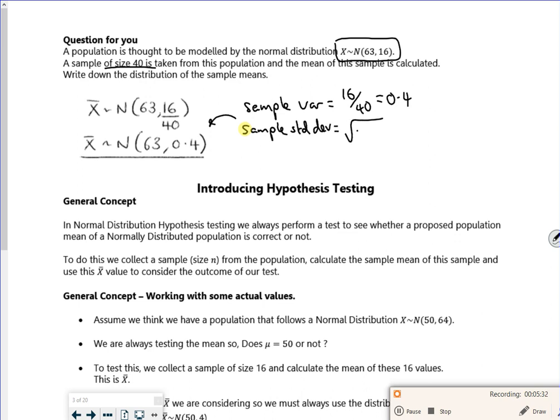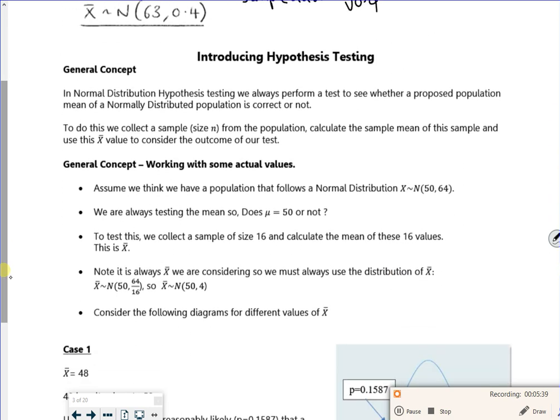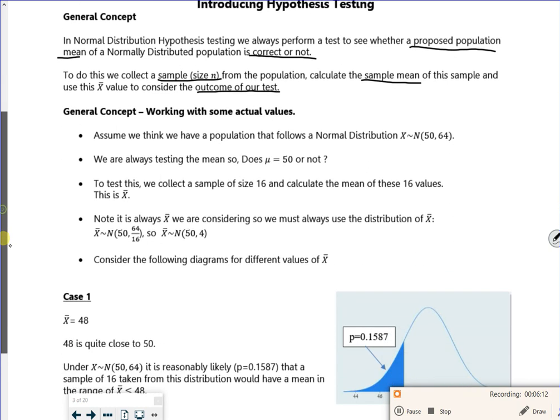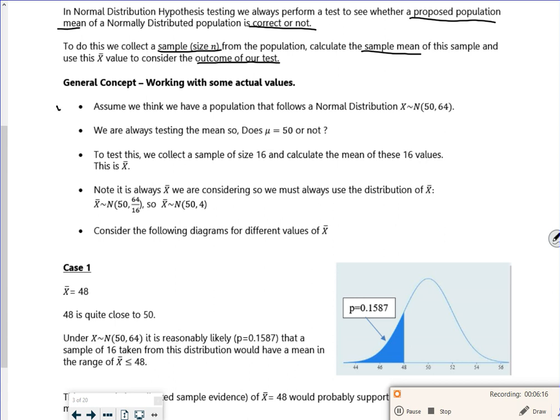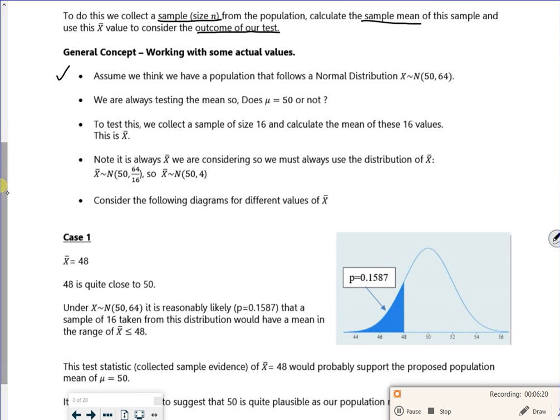So the general concept of hypothesis testing: we're saying here we perform a test to see whether the proposed population mean for a normal distribution is correct or not. So testing a sample mean against what I think it should be. We do this by collecting a sample of size n, calculate the sample mean, and use this x̄ to consider the outcome of the test. We assume that it's normal—it should say in the question that it's normal. We're always testing the mean, so we want to see if the mean is equal to a value or not.